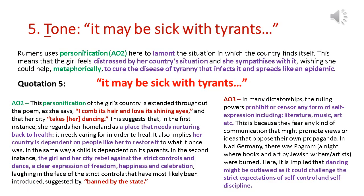If we look at the tone of Rumens' poem, we'd use the quotation 'it may be sick with tyrants.' Firstly, Rumens is using personification of the homeland, and we can see that the girl is lamenting the situation in which her country finds itself — she feels distressed by her country's situation and sympathises with it, wishing she could help. She wants to metaphorically help cure the disease of tyranny that infects it and spreads like an epidemic.